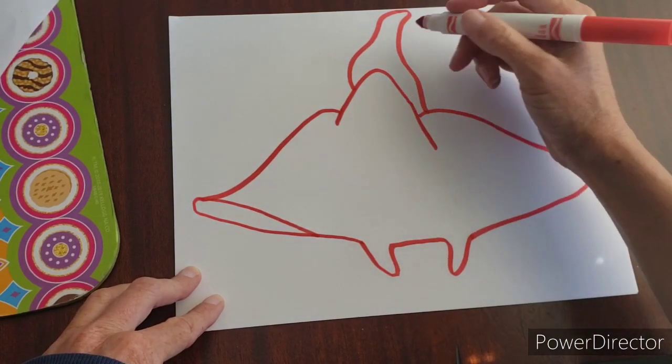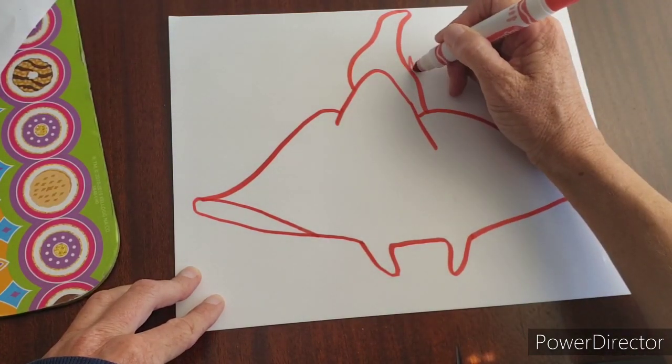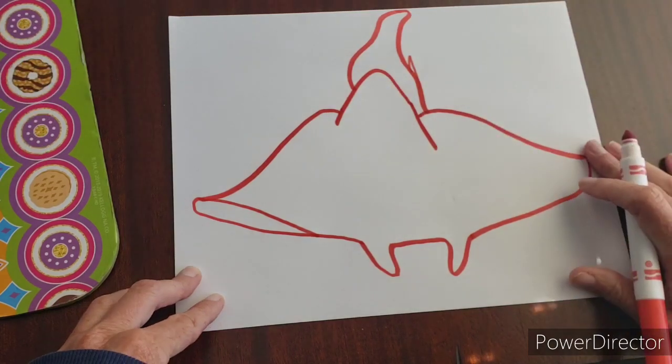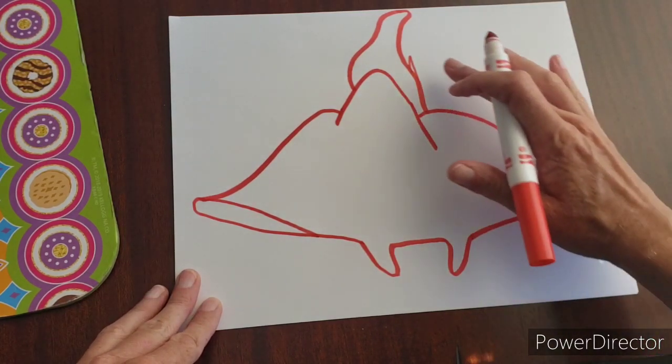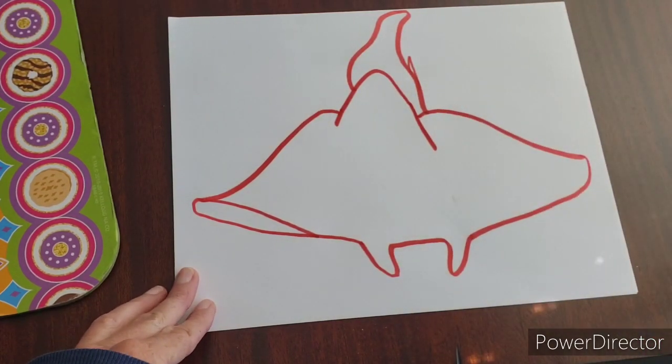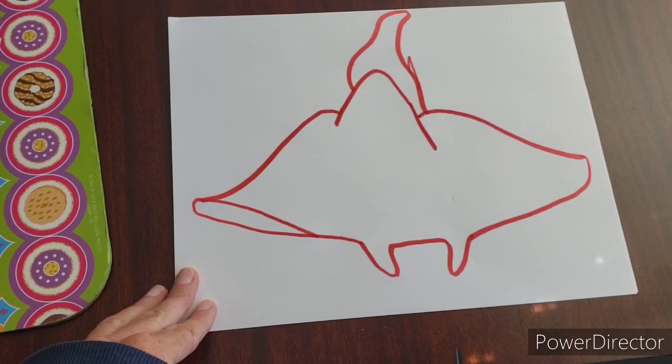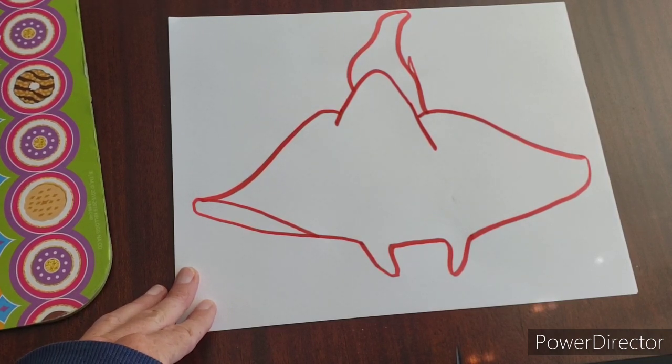And then some tails have a little fin on it or little sharp pieces coming off. So you can give it one little sharp piece. If you want, you can give it two. This is your stingray, so you can do whatever you want.